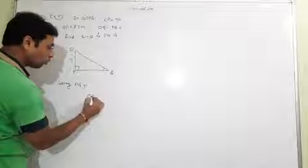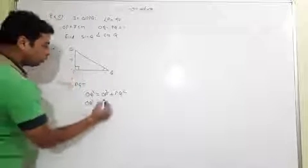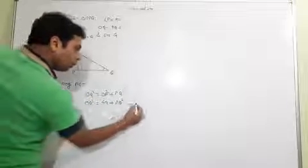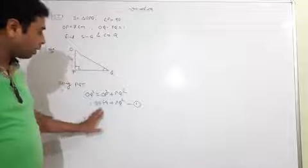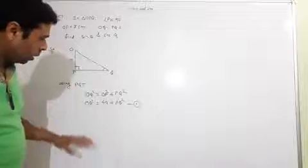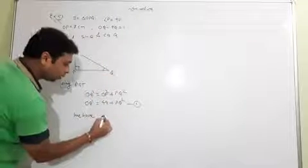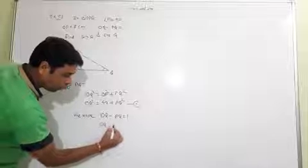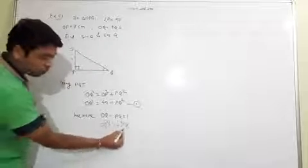Pythagoras theorem: OQ squared is equal to OP squared plus PQ squared. OQ is still unknown, OP is equal to 7 so 7 squared is 49, plus PQ squared. We also have OQ minus PQ equal to 1, meaning OQ is equal to 1 plus PQ — transferring PQ to the other side.